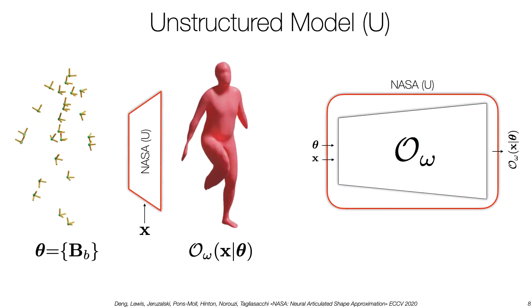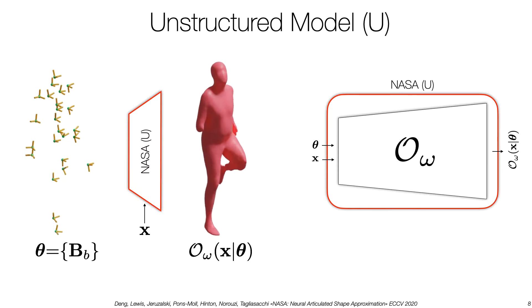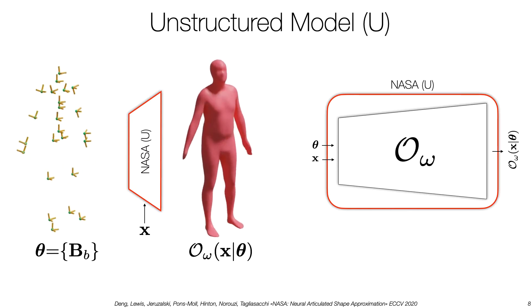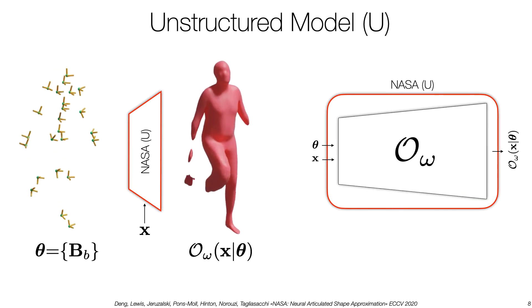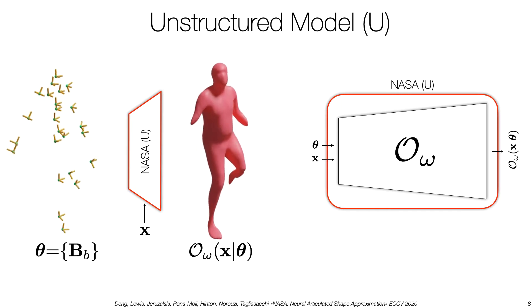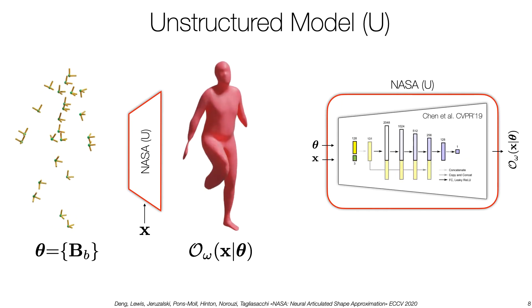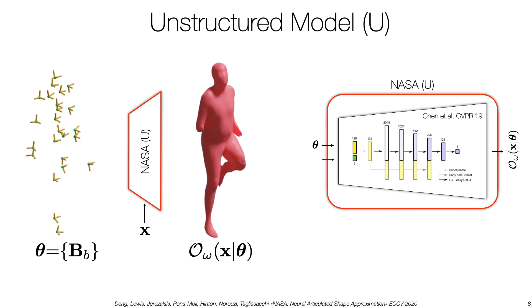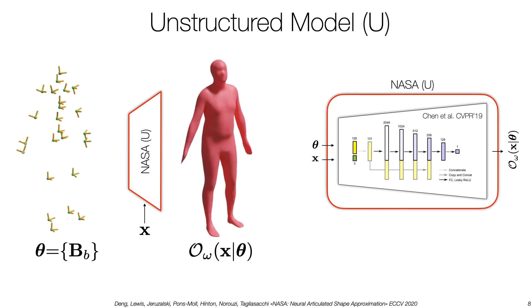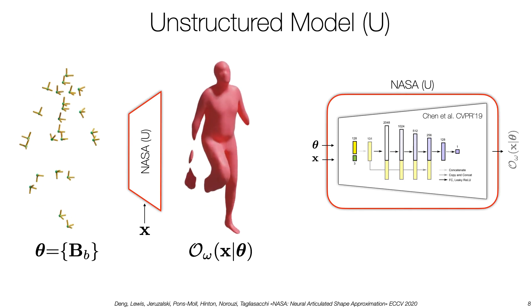Our first model is a simple adaptation of recent neural implicit representations. The model is a simple chain of fully-connected layers. For example, we could use the Chen et al. architecture. It receives as input a point coordinate concatenated with a feature vector and outputs a scalar occupancy.